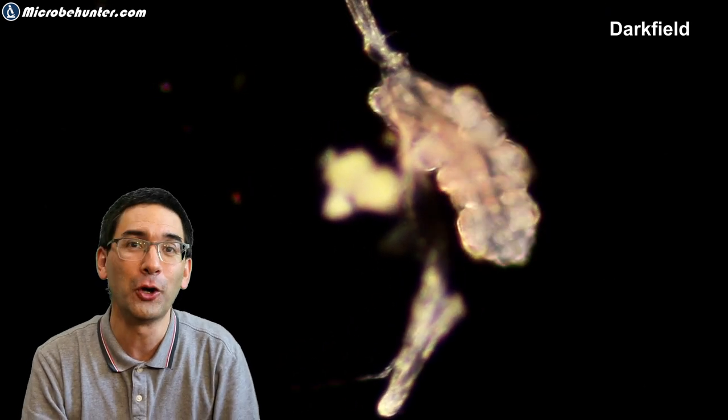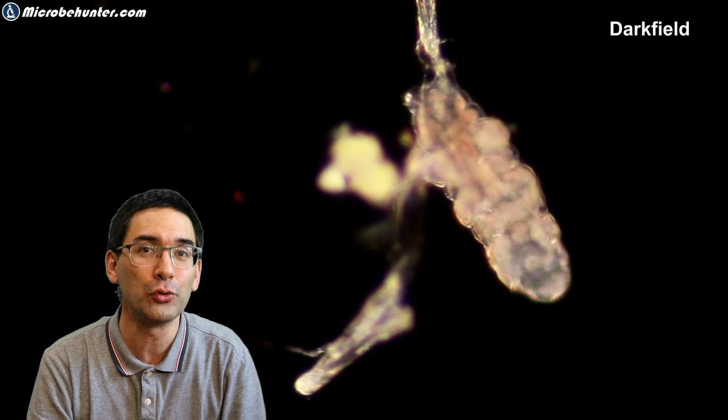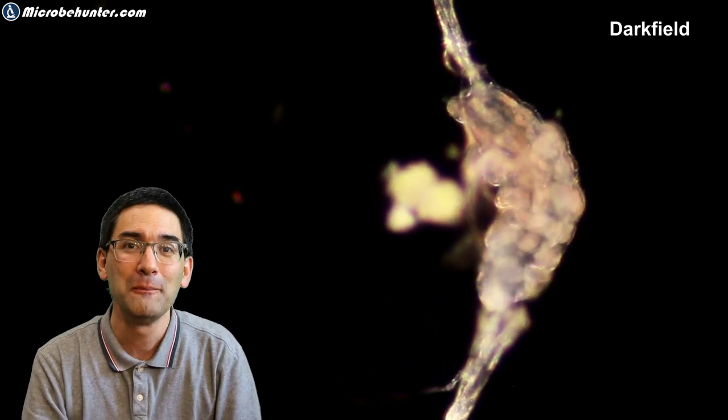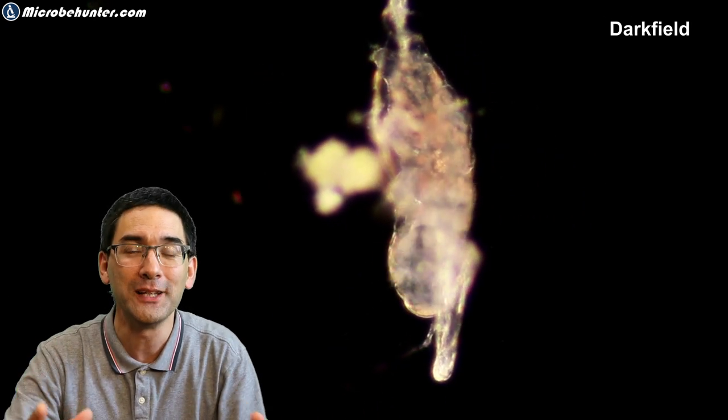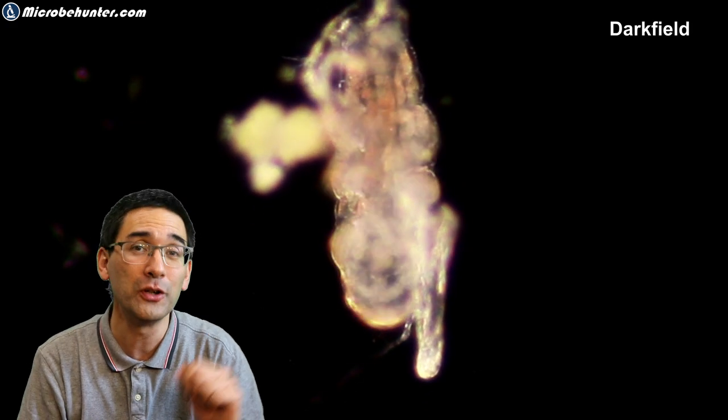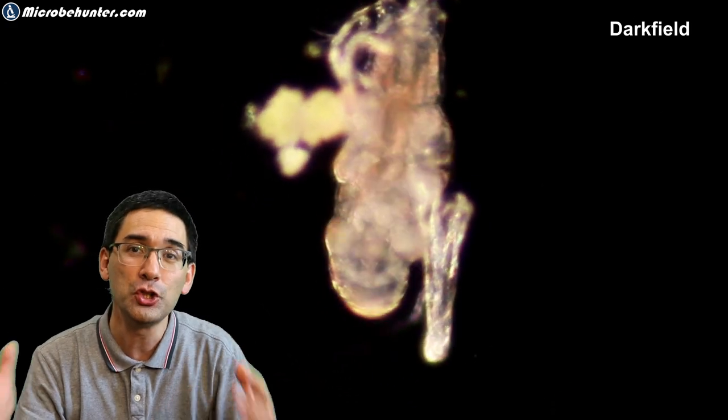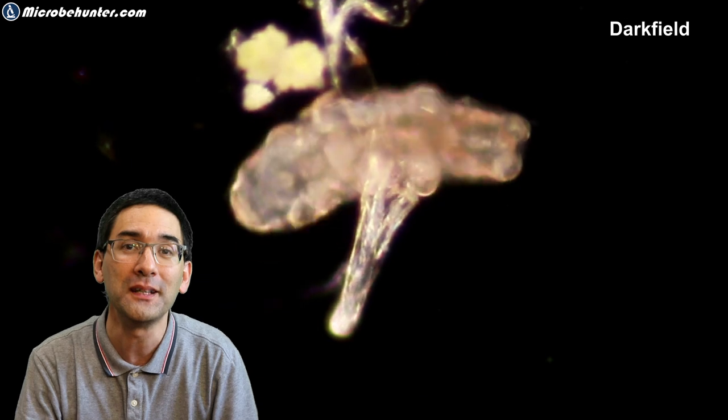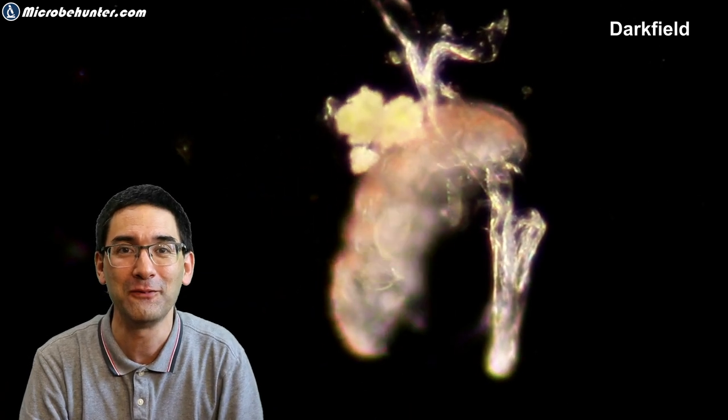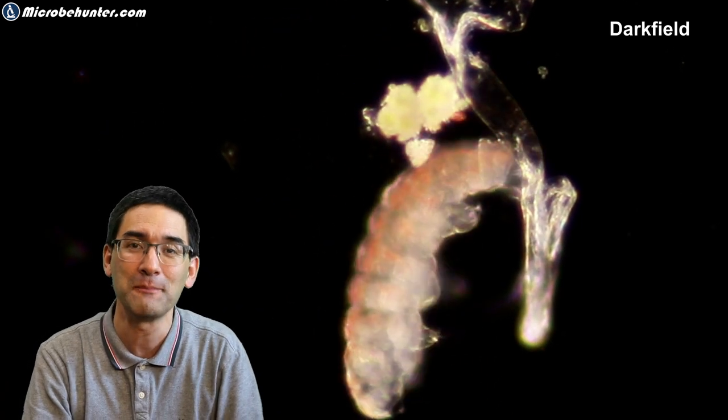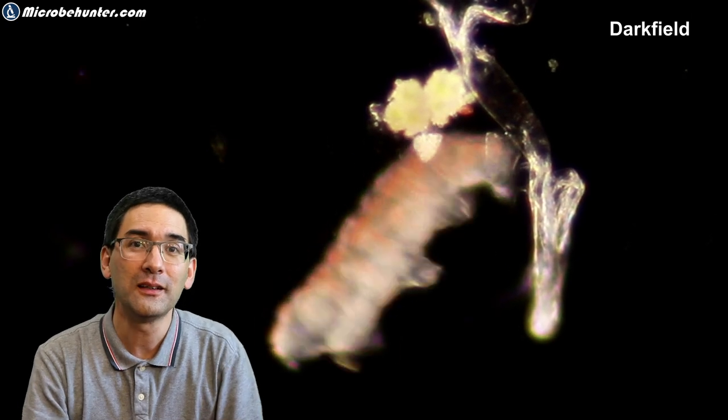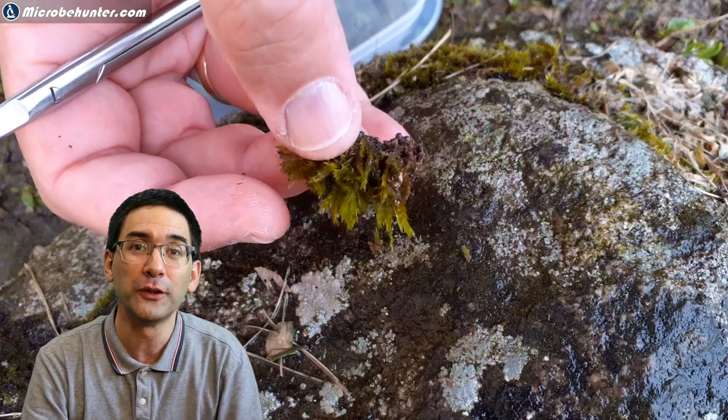This here shows a tardigrade in so-called dark field microscopy. It's called dark field because the tardigrade appears bright on a dark background. In the corner, if you look carefully, I've mentioned which type of microscopic technique I used to film these tardigrades.